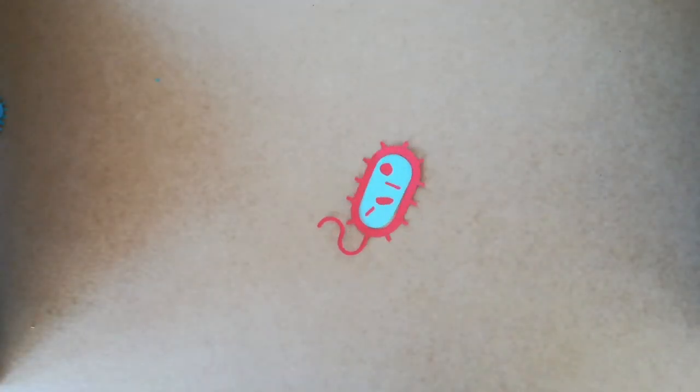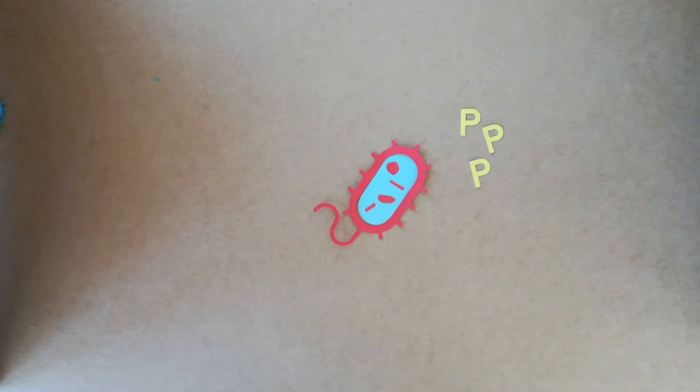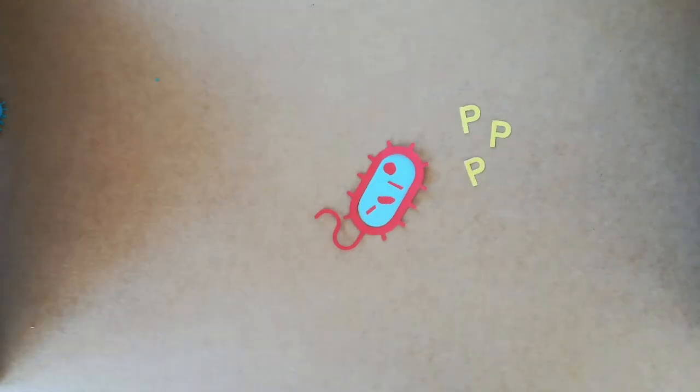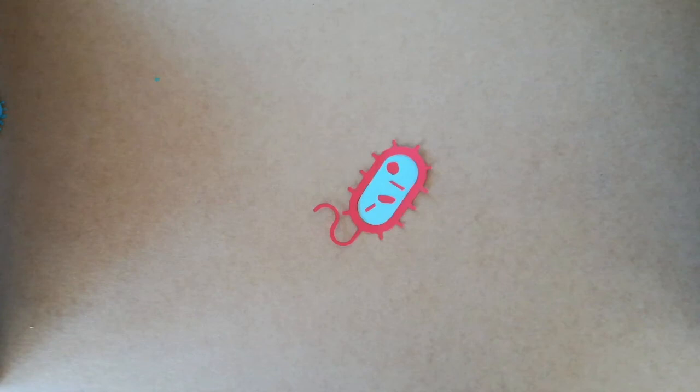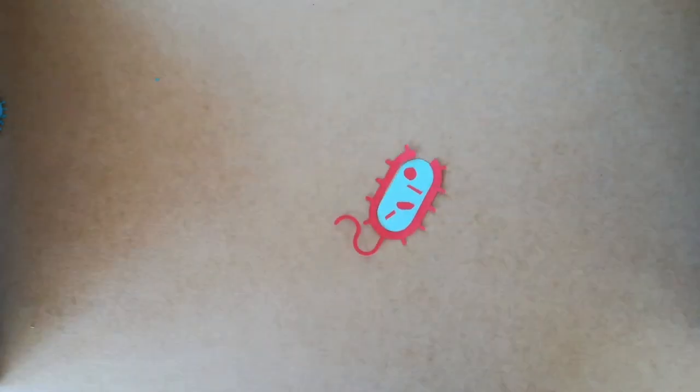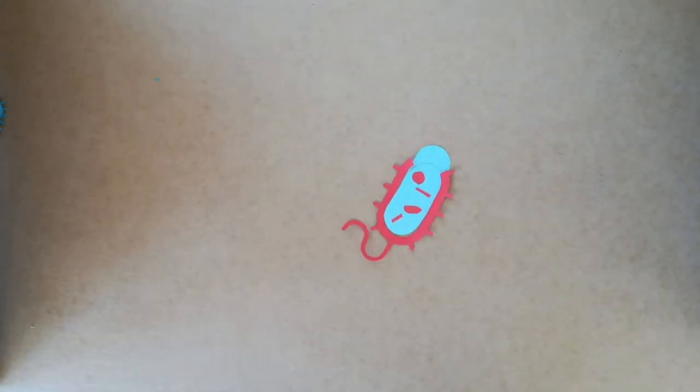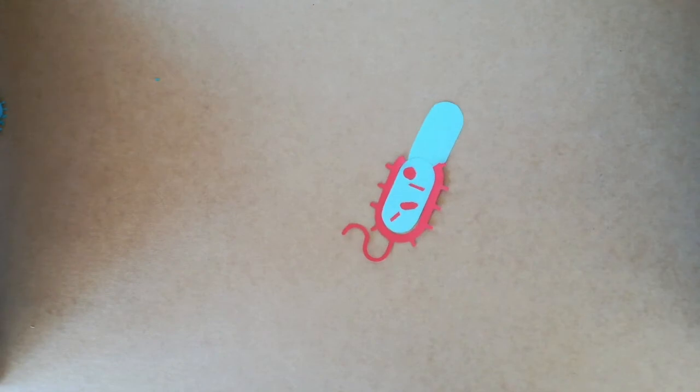The first discovered antibiotic is penicillin. Penicillin affects the cell wall of the bacterial cell. In order to reproduce, a cell needs to divide. To do this, they have to open their cell wall, divide, and then build their cell wall up again.